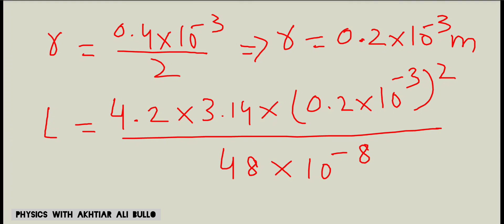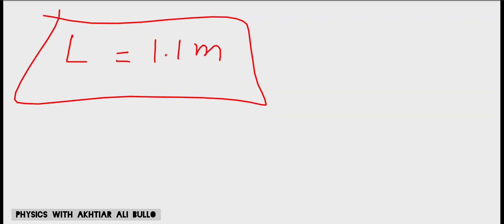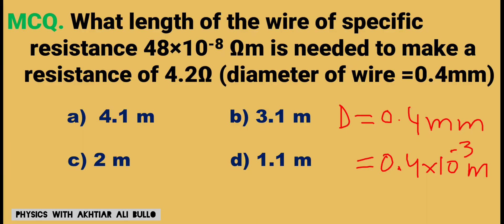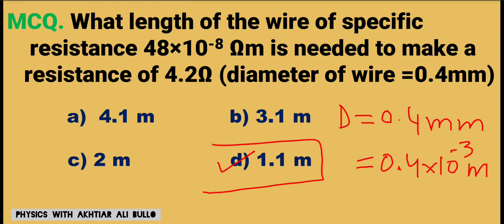After simplification, the length of the wire is obtained as 1.1 meters. So the correct option is d) 1.1 meters.